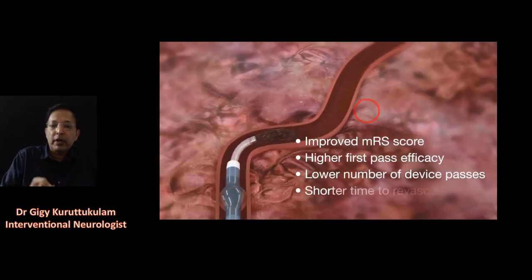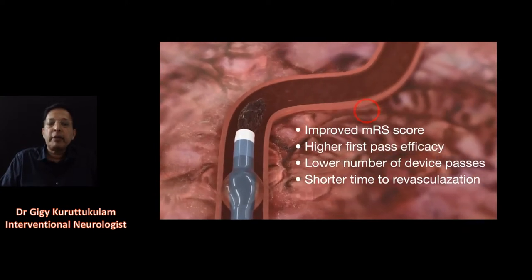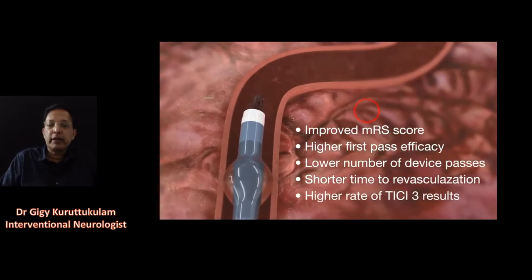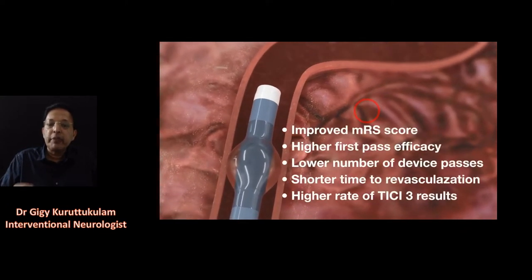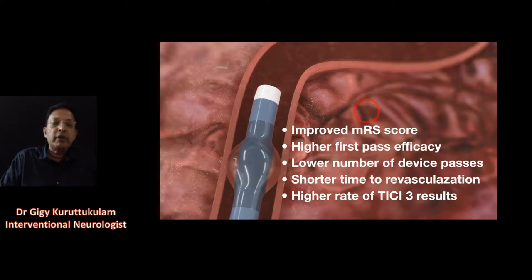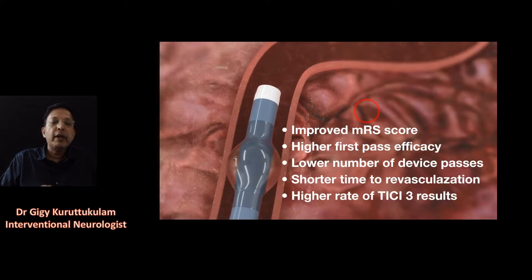When you are pulling out the clot using a stent retriever while aspirating, the chance of the blood clot coming out completely without fragmentation is much higher. This leads to higher first-pass efficacy, fewer passes required, much less time taken for recanalization, and a higher rate of TICI 3 recanalization — meaning complete recanalization without any embolism to new territory.